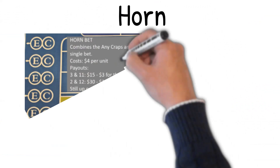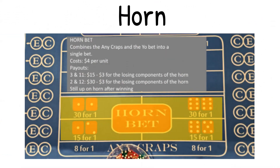Horn bet. Combines the any craps and the yo bet into a single bet. Costs four dollars per unit. The payouts: three and eleven pay fifteen dollars minus three dollars for the losing components of the horn. The two and twelve pay thirty dollars minus three dollars for the losing components of the horn — and you're still up on the horn after winning.